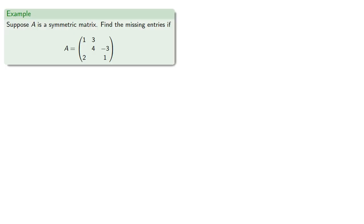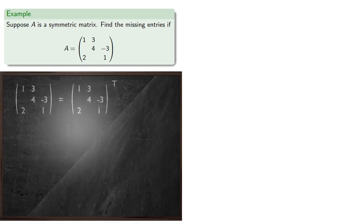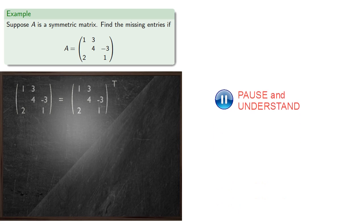Suppose A is a symmetric matrix except we don't know some of the entries. Let's find those missing entries. Since A is a symmetric matrix, we know that A is A transpose. We can find the transpose of our matrix. Since the two matrices are the same, the missing entries on the right-hand side must be the entries on the left-hand side.